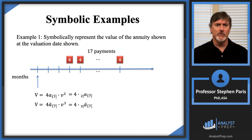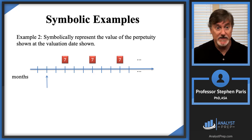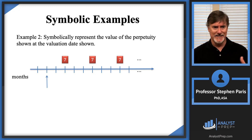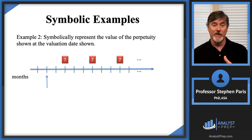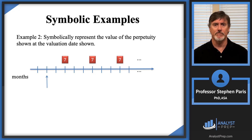The more natural choices would be one of the first two — they're equally natural to me. Let's look at another example: symbolically represent the value of the perpetuity shown at the valuation date. Since the timeline is monthly and payments are every three months, I can describe this as quarterly payments of seven forever, valued two months before the first payment.